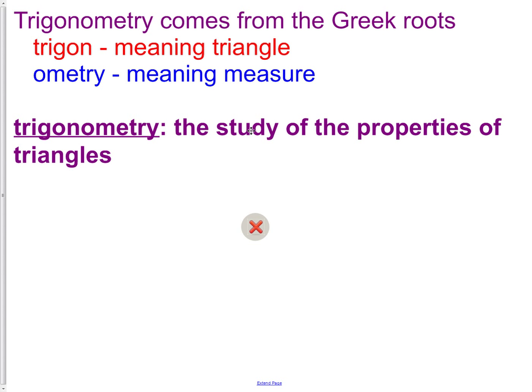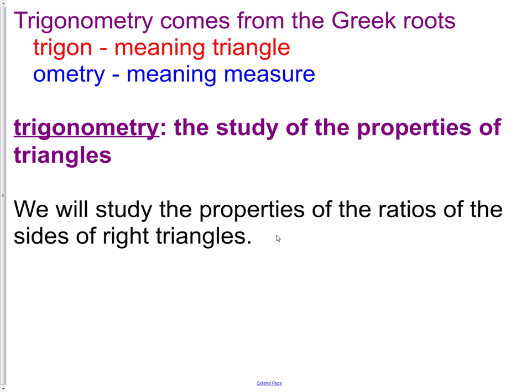Trigonometry is the study of the properties of triangles. We've already studied a lot of the properties of triangles, and it's one of the key concepts when we study in geometry. We will study the properties of the ratios of the triangles now.